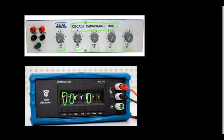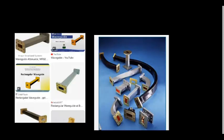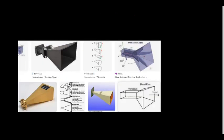So you can identify it as a decade capacitance box. Now, if you see any kind of pipe structure — this kind of pipe structure — then it is a waveguide. It can have different shapes: cylindrical, square, but normally it is rectangular. This waveguide is used for RF. Any kind of hollow tube structure you see — it is the waveguide.